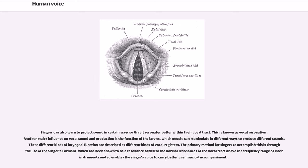Singers can also learn to project sound in certain ways so that it resonates better within their vocal tract. This is known as vocal resonation. Another major influence on vocal sound and production is the function of the larynx, which people can manipulate in different ways to produce different sounds. These different kinds of laryngeal function are described as different kinds of vocal registers.